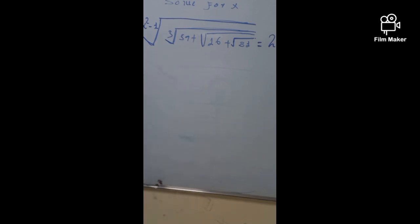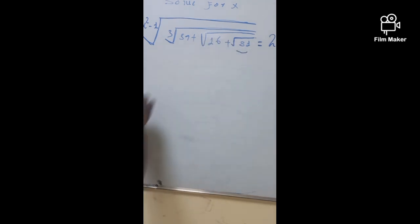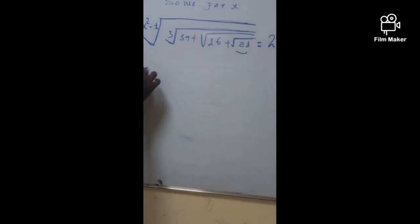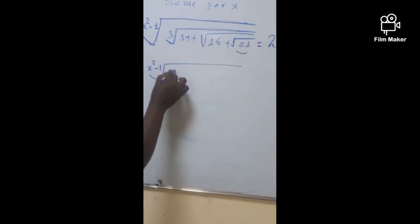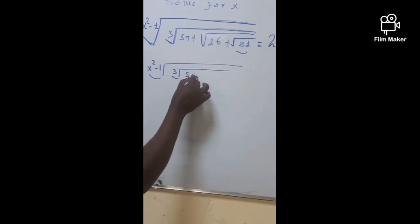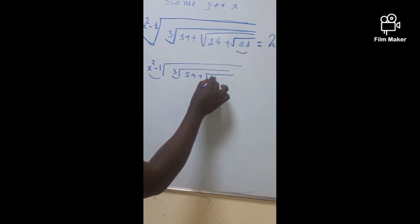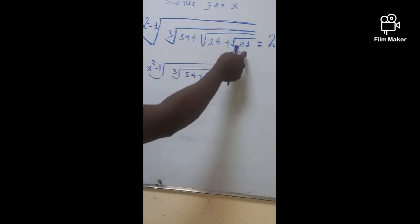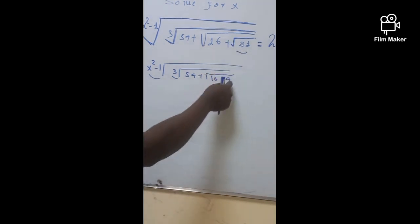So in the first case, you have to start from this part. So when we start from that part, this is going to be given by x square minus 1 root all. This is going to be the cube root of 59 plus square root of 16 plus 9. Because you know that the square root of 81 is going to be 9.